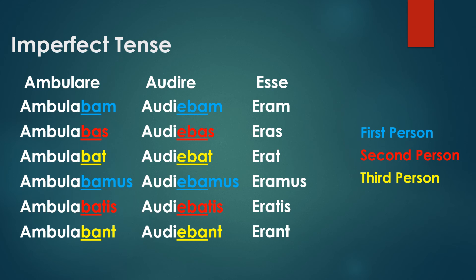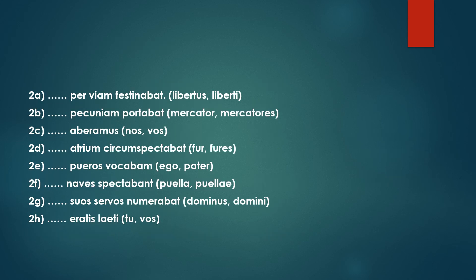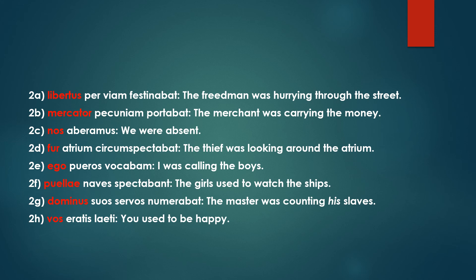On the far right we have the conjugation for 'esse,' which is the main irregular verb in the imperfect tense. It runs as follows: eram, eras, erat, eramus, eratis, erant. The general endings for the imperfect tense are: bam, bas, bat, bamus, batis, bant. Here we have an exercise based on those verb endings for the imperfect tense — please pause the video and restart once you've had an adequate attempt. Here are the answers. Hopefully you found this video helpful and I'll see you in the next one.